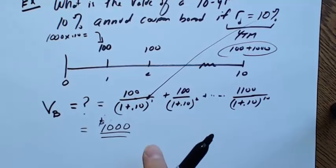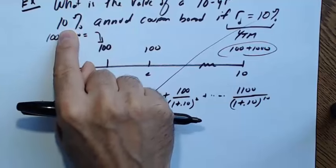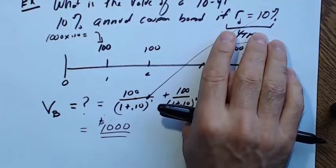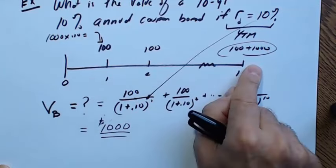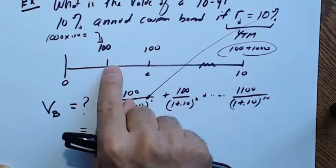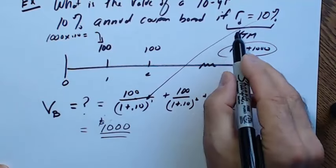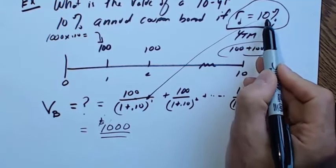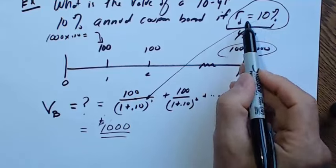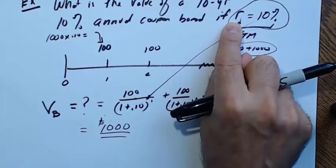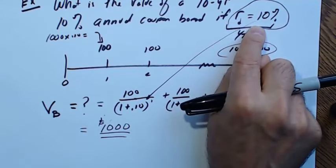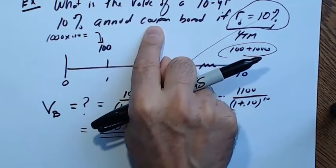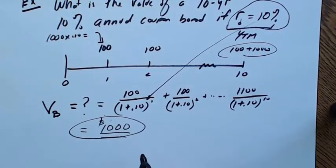It's no coincidence that the bond has a par value of $1,000 and its price is $1,000. This bond generates 10% cash flow — it's fixed. Bonds are often called fixed income securities because these cash flows are fixed; you know exactly when and how much you'll receive. What changes is the interest rate. Right now, the market demands 10% for this bond given its risk, and this bond generates exactly 10%, so it trades at $1,000 — what we call at par.